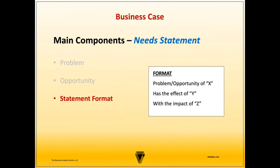The format of a situation statement is as follows: the problem or opportunity of X has the effect of Y with the outcome of Z. An effect refers to a direct or immediate result or consequence that arises as a result of a specific action, event, or situation. Effects are typically the direct outcomes of a cause-and-effect relationship. They're often easier to measure and quantify, and they're more specific and narrowly focused.